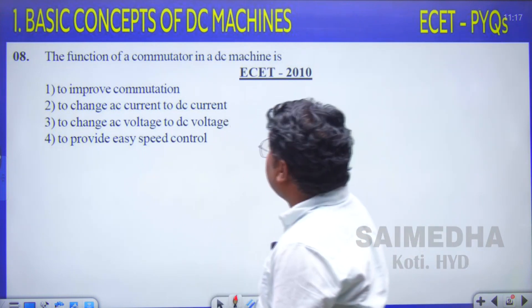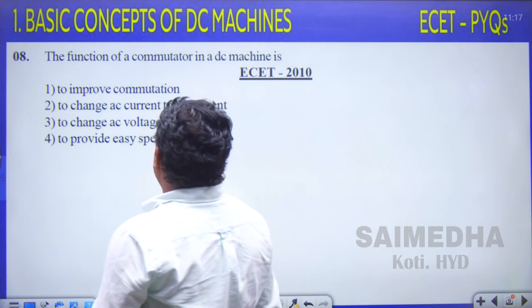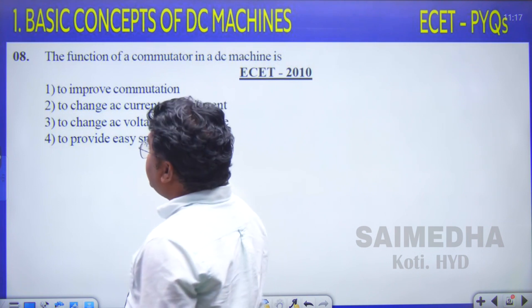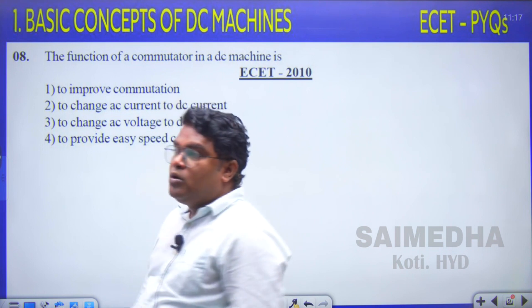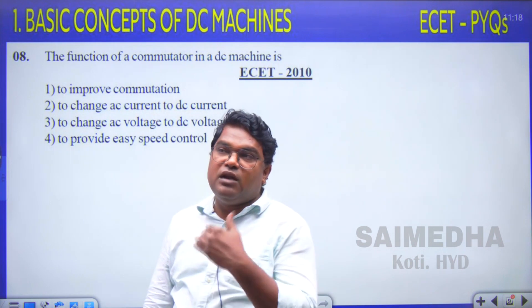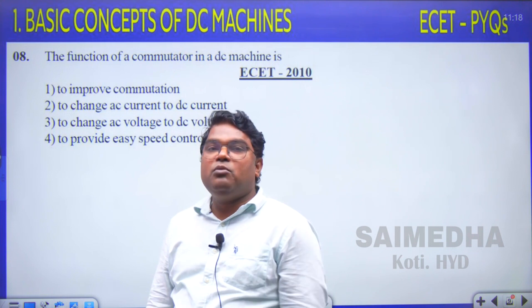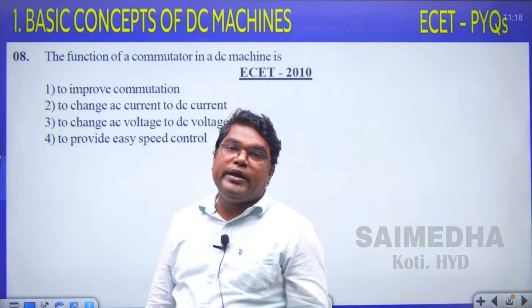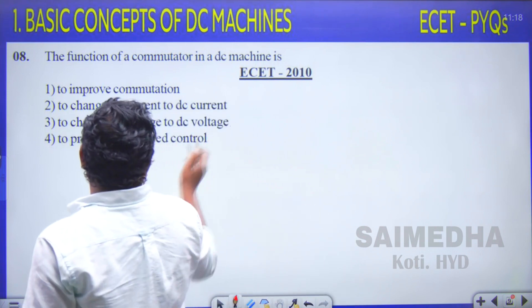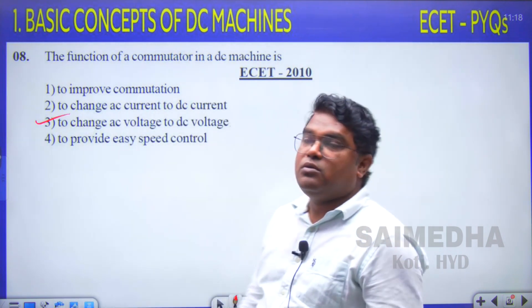Question 8: The function of a commutator in a DC machine is — option 1: to improve commutation, option 2: to change AC current to DC voltage, option 3: to change AC voltage into DC voltage, option 4: to provide easy speed control. The commutator in a DC generator converts AC voltage to DC voltage; in a motor it converts DC voltage to AC voltage. Therefore option 3 is correct.